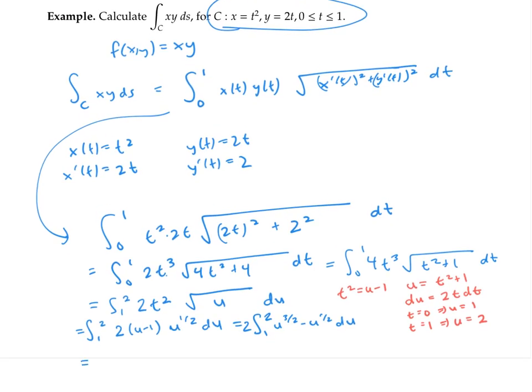So that becomes twice u to the five halves times two fifths minus u to the three halves times two thirds, evaluated at two and one. After a little arithmetic, that becomes eight fifteenths times the square root of two plus one.